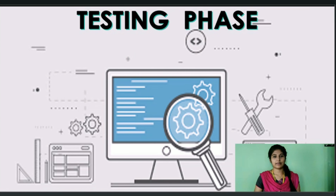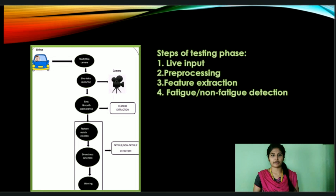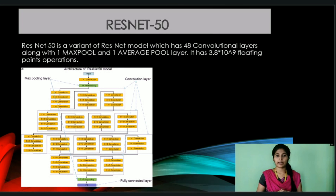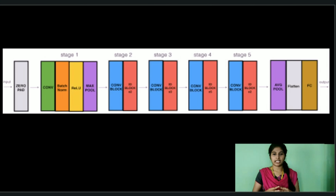After the training phase comes the testing phase. The first step is giving the driver's continuous video as input using the webcam, which is then converted into grayscale frames. Following this, the pre-processing and feature extraction are done similar to the training phase. The samples in the database are classified using the ResNet-50 convolutional neural network — ResNet-50 is used for image classification and has 50 layers, so the accuracy of classification is higher.